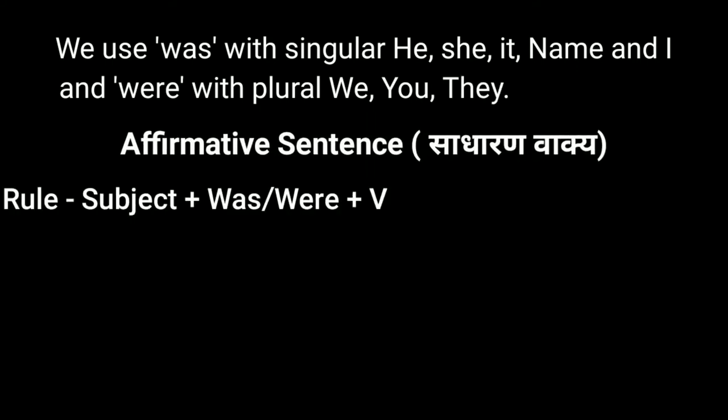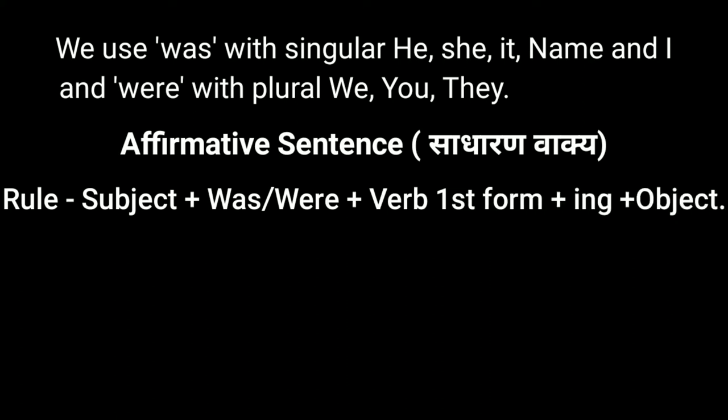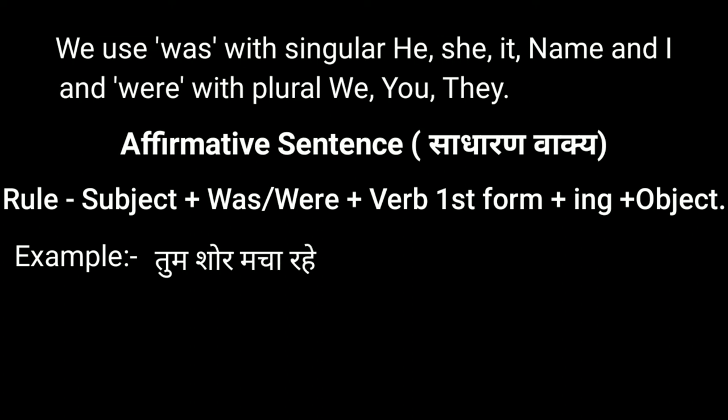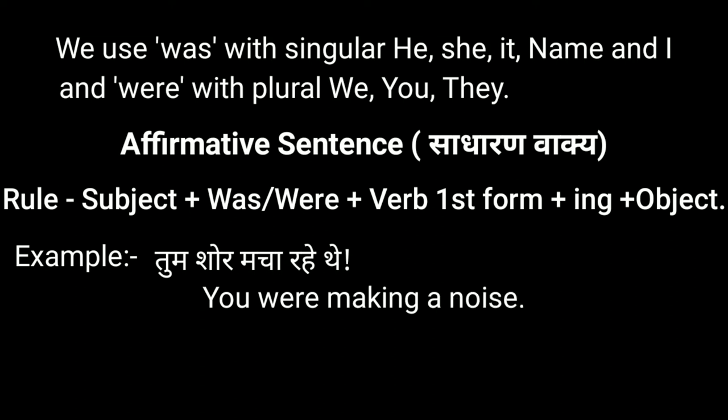Affirmative sentence: For making this sentence we use Subject + was/were + verb first form + ing + object. For example, 'तुम शोर मचा रहे थे' — 'You were making a noise.' In this, 'you' is the subject, 'were' is the helping verb, 'making' is the verb first form plus ing, and the rest is the object.